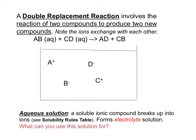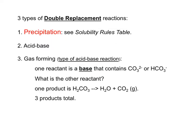In a double replacement reaction, compound AB reacts with compound CD. Ion A combines with Ion D to form one product, and Ion C combines with Ion B to form the second product. In a precipitation reaction, one of those products is insoluble in water, and we want to be able to use and apply a solubility rules table.